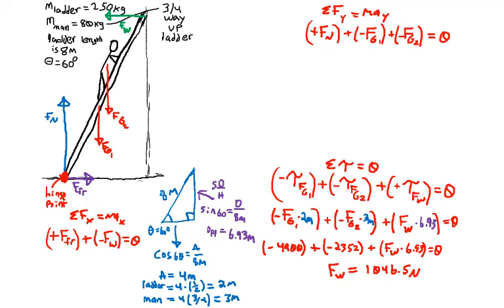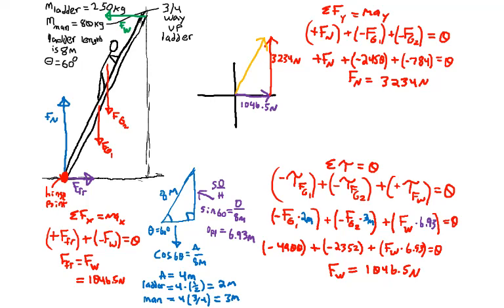So we'll end up getting 1046.5 for the wall force and friction force 1046.5 newtons. And then for our normal force, 3234 newtons. When we bring those together, 1046.5 newtons for the x and then 3234 for the y, for a total reaction force of 3399.11 newtons at 72.1 degrees above the x-axis.